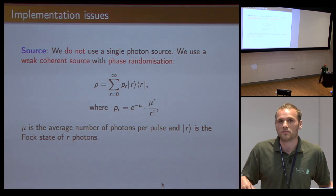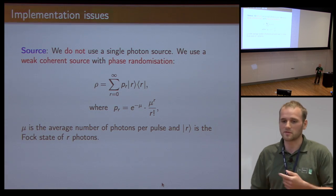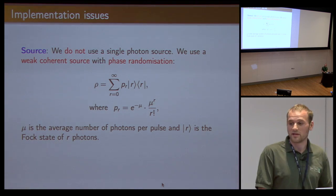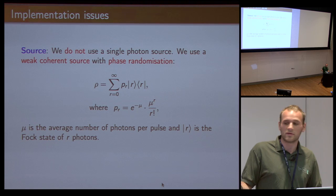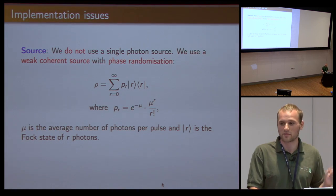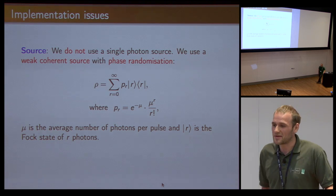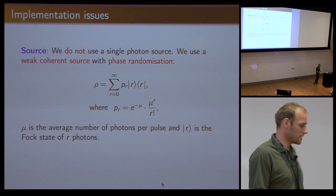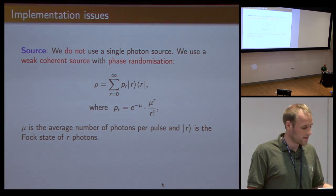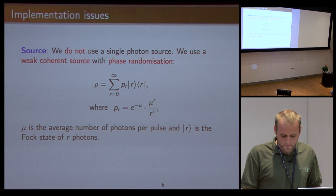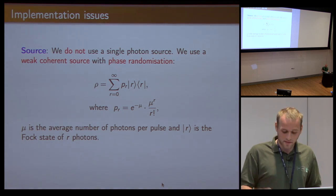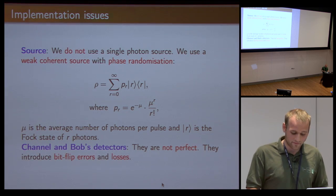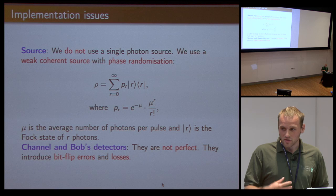The previous security proofs all deal with the idealized scenario. You have perfect sources, perfect detectors, no noise, no anything. Very nice, but not realistic, because when we actually did the experiment we didn't have a single photon source. We used a weak coherent source with phase randomization. The density matrix looks like this, there is some mu, the mean photon number which you can play with. You need to extend the analysis, it's not so straightforward. The same for channels and detectors—there will be bit flip errors, there will be losses, you need to account for that.